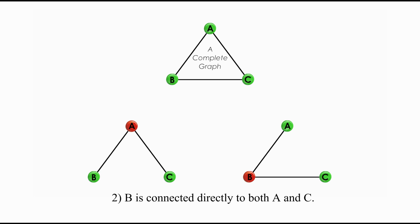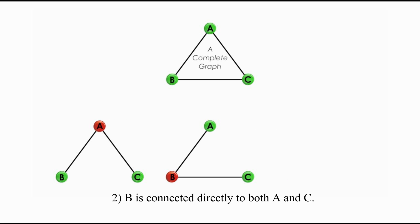2. B is connected directly to both A and C. B is a bridge between A and B, and B is a central point. All three points are connected, and no loop is formed.